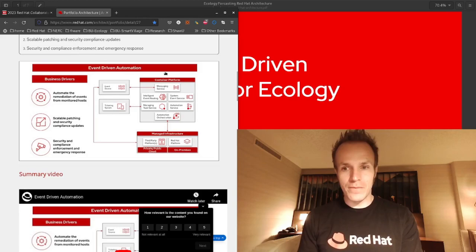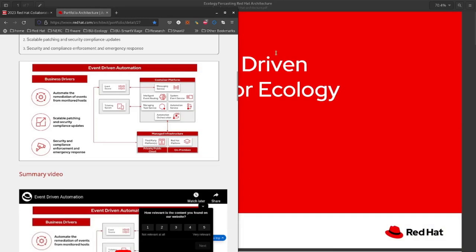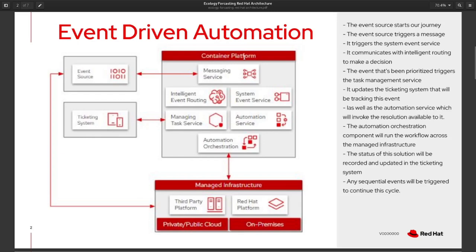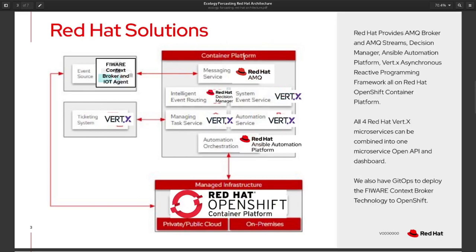That's why we have put together the Red Hat event-driven architecture for ecological forecasting. It's the same portfolio architecture — how an event starts a journey and triggers a message, and rules are applied, like I explained earlier.